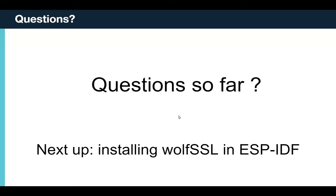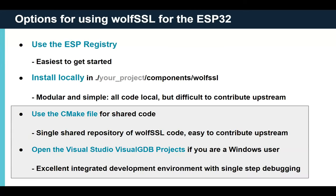Now this is where we actually start using WolfSSL in the ESP-IDF. To use WolfSSL on the ESP32, I found there are basically three different ways, each with pros and cons. The first is the ESP Component Registry — by far the single easiest way to get started. Espressif has done an amazing job baking into their development environment the ability to download a component and install it with little or no effort. The catch is it's a fixed version in time and it's local to your project — you can't easily fetch the latest from GitHub.